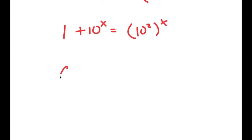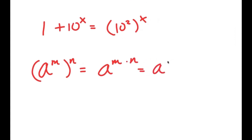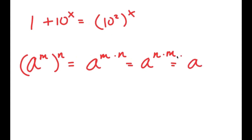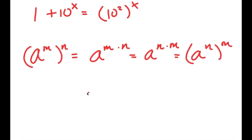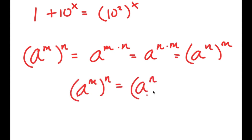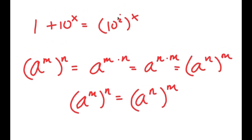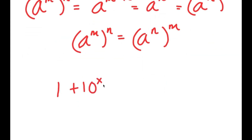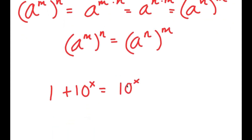Now, if I have something in the form a to the power of m to the power of n, this is equal to a to the power of m times n. And since multiplication is commutative, a to the power of m times n is the same as a to the power of n times m, which means a to the power of m to the power of n equals a to the power of n to the power of m. So for 10 to the power of 2 to the power of x, I can switch the values of 2 and x. So now I get 1 plus 10 to the power of x is equal to 10 to the power of x to the power of 2.